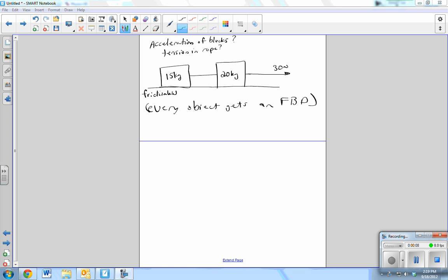Every object, when you have multiple objects, every single object gets its own free body diagram. So start by drawing the free body diagrams of both objects.